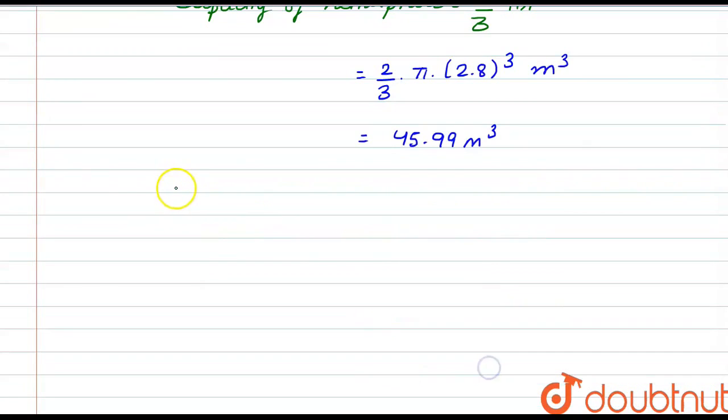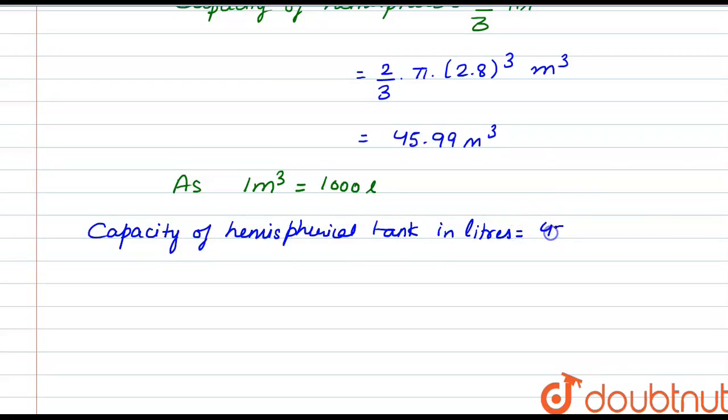As we know that 1 meter cube is equal to 1000 liters, so the capacity of hemispherical tank in liters would be 45.99 × 1000 liters. So the value comes out to be 45,990 liters.